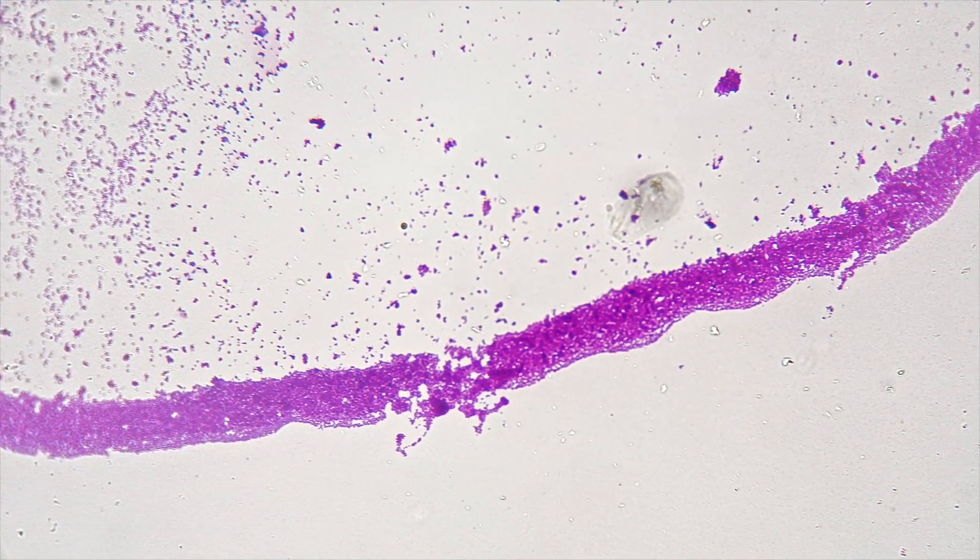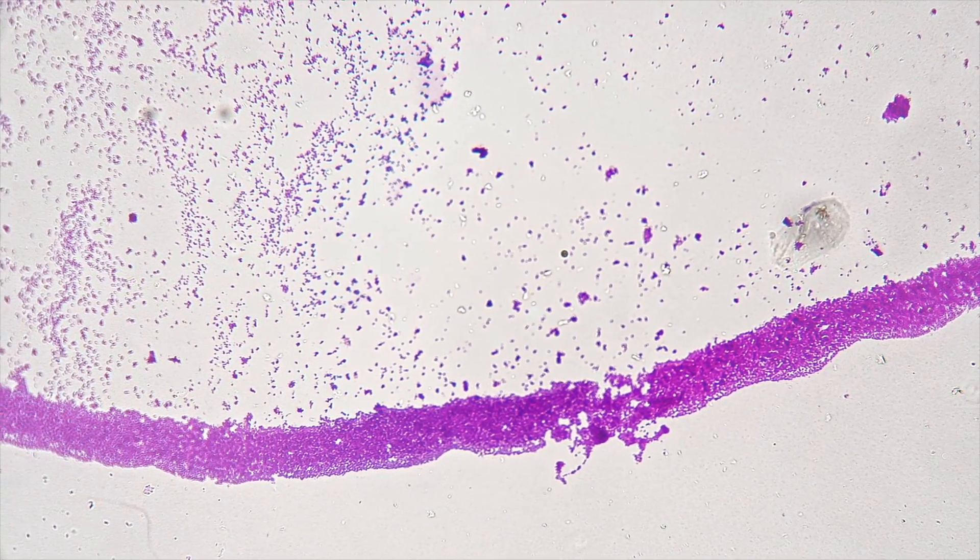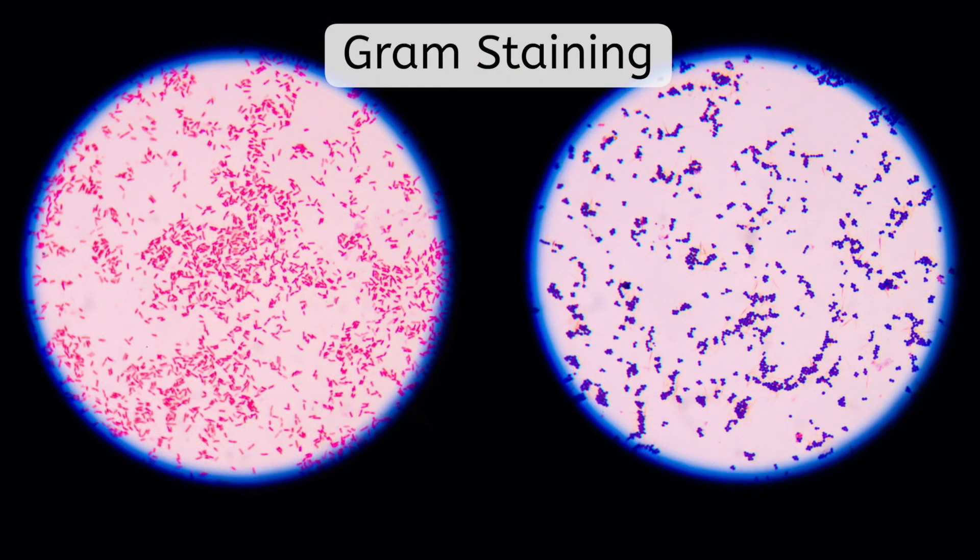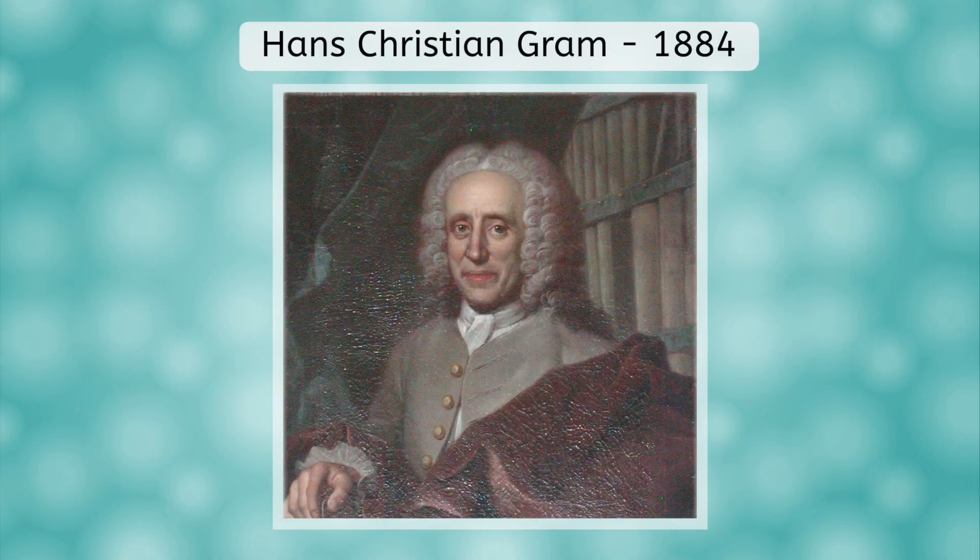Another way that bacteria are often classified is by color, except that most bacteria in their natural state would be white or clear, not helpful for classification. But a common procedure is to stain the bacteria cells with a series of dyes and see which dye sticks. This process is called Gram staining, after Hans Christian Gram, who first performed it in 1884.